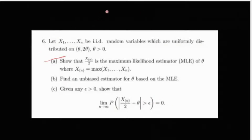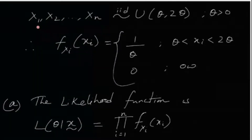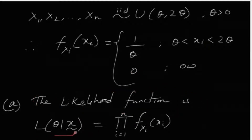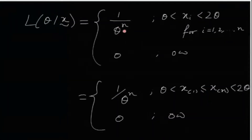Let us do the first part. Given X1 through Xn are iid Uniform(θ, 2θ), the PDF of Xi is 1/θ if Xi belongs to (θ, 2θ) and 0 otherwise. The likelihood function L(θ | x) is the product of the marginal PDFs since they are iid, which gives (1/θ)^n, provided each Xi lies between θ and 2θ, and 0 otherwise.